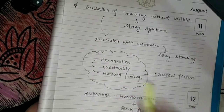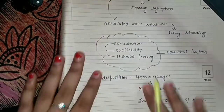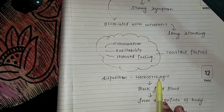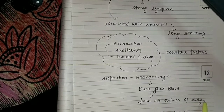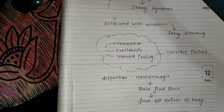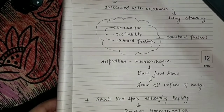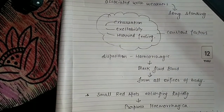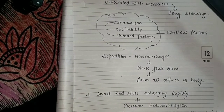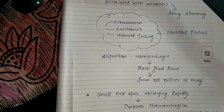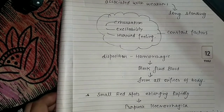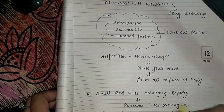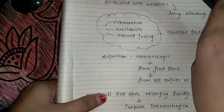The disposition is hemorrhagic. Black fluid blood from all orifices of the body. Small red spots enlarge rapidly — we call this purpura hemorrhagica. Blue-black spots on the skin appear from the slightest injury. Due to the slightest injury we can see blue and black spots on the skin, so we can think about this medicine. We can prescribe it in purpura hemorrhagica — that is one pathological point.